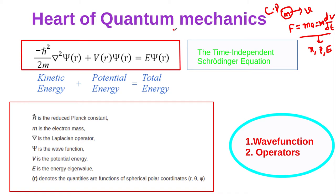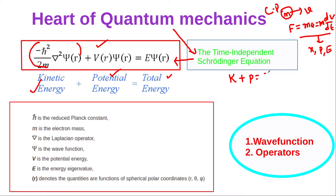Similarly, there is an equation in quantum mechanics known as the Schrödinger equation, which is the heart of quantum mechanics. It is: −(ħ²/2m)∇²ψ(r) + V(r)ψ(r) = Eψ(r). The first term on the left-hand side is the kinetic energy part, the second term is the potential energy part, and the right-hand side is the total energy part. This is very similar to the classical equation: kinetic energy plus potential energy equals total energy.